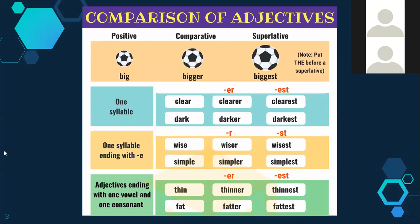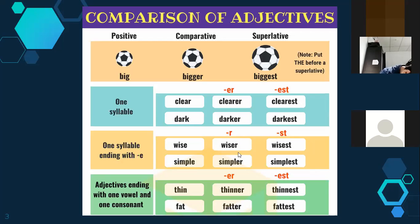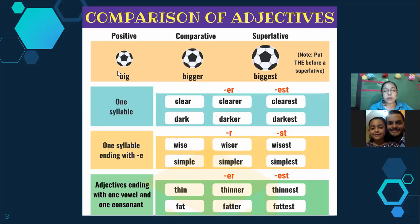For one-syllable adjectives ending with -e, Marcus reads: wise, wiser, wisest; simple, simpler, simplest. So we only add -r for comparative — wise plus r is wiser — and wise plus -st is wisest. Simple plus -r is simpler, simple plus -st is simplest. That's how we form comparative and superlative for this group.